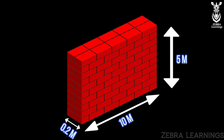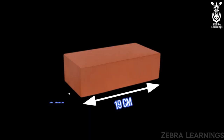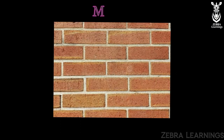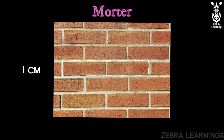There are many types and sizes of bricks. We can use a brick of 19 cm length, 9 cm width, and 9 cm height. When we build a wall, we use mortar between each brick. Mortar is nothing but the cement mixture used between each brick. The size of the mortar is 1 cm.